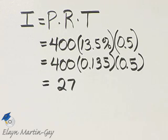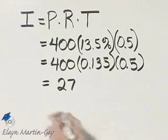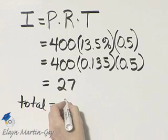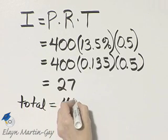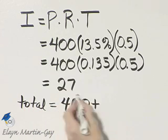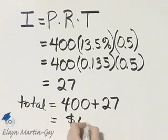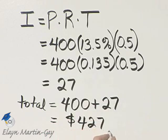27 is the amount of interest the couple needs to pay. So what is the total amount due the bank at the end of the six-month period? The total amount will equal the amount they borrowed. They borrowed $400, and then the interest they'll be paying is $27. So the total amount due is $427.